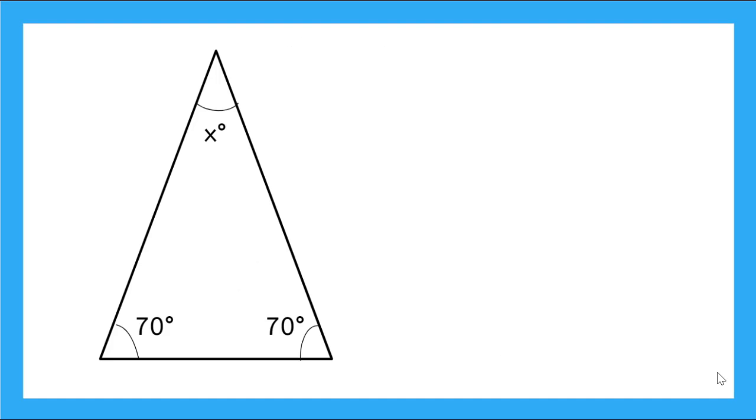So here I have a triangle with two given angles and one mystery angle. How will I find the degrees of my mystery angle? Well, I know that my interior angles are all going to add up to 180 degrees. So I can say 180 degrees is equal to my mystery angle plus 70 degrees plus 70 degrees. And now I just need to solve this equation for x.